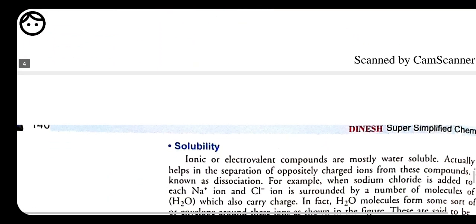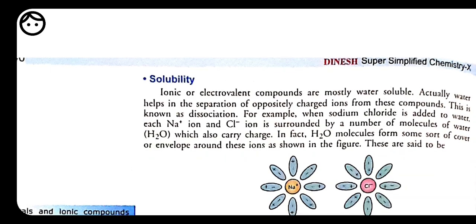Third property: solubility. Water is taken as a universal solvent. Ionic compounds are generally soluble in water. Water itself has partial charges — though hydrogen and oxygen are both non-metals forming a covalent bond, oxygen being the second most electronegative element attracts electrons from hydrogen. This gives oxygen a partial negative charge and hydrogen a partial positive charge, making water slightly ionic in character. That's why water can dissolve almost all ionic compounds.